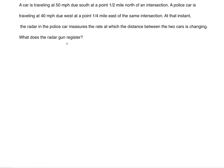Let's draw a picture. The car is traveling 50 miles per hour due south at a point one-half mile north of the intersection. We label the intersection point I. We draw a line segment going up from the intersection, since the car is moving from the north side toward it, and a line segment to the right of the intersection for the police car coming from the east.